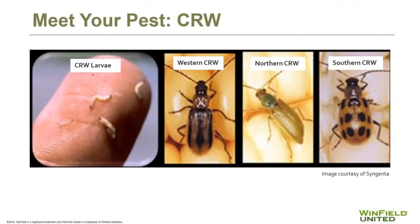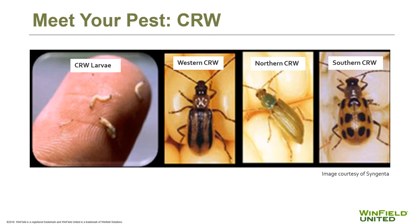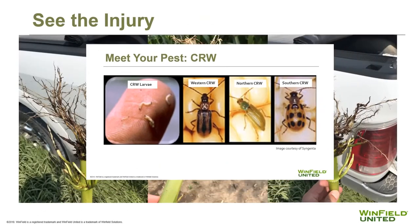Beginning with the larvae on the left, these turn into the three different adult species shown in the pictures on the right — your western, your northern, and your southern corn rootworm. These adults can be identified by the different colored markings on their backs.